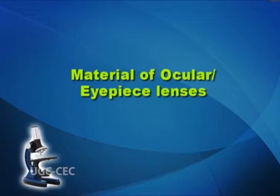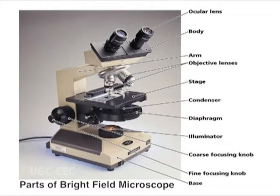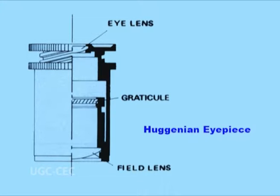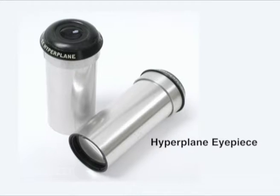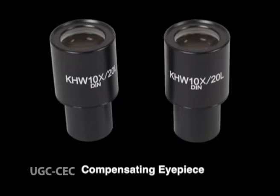The microscope has a field lens close to the object and an eye lens close to the eye. Its main function is to magnify the real image from the objective and to correct the defects of the objective. The eyepiece is mainly of three types: Huygenian eyepiece, where two simple plano-convex lenses are employed; Hyperplane eyepiece, used with high power achromatic and apochromatic objectives to reduce chromatic aberrations; and Compensating eyepiece, which consists of a chromatic triplet combination of lenses and is more perfectly corrected than the above two types.